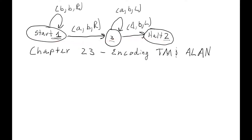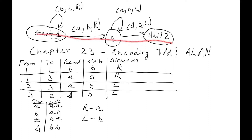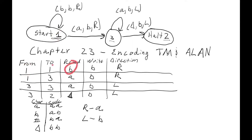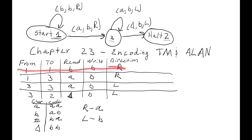We can't just put this diagram in as input onto a Turing machine — we have to convert it to a string somehow. The book has noted that for every Turing machine or finite automata, you can write it down in table format, where you say: if you're in state one and you read a B, then you go to state one, write a B, and move the tape head to the right. You could basically take every edge and write a row in this table that represents what that edge will do. We're going to use that to encode this Turing machine.